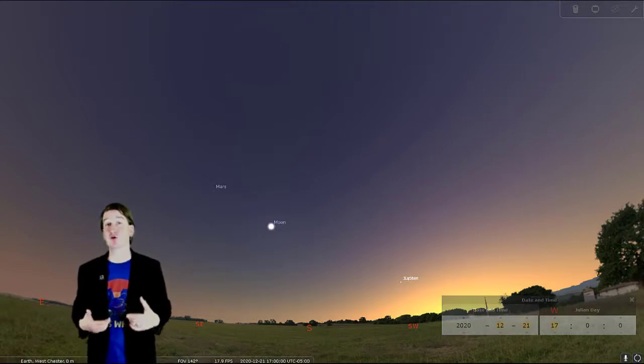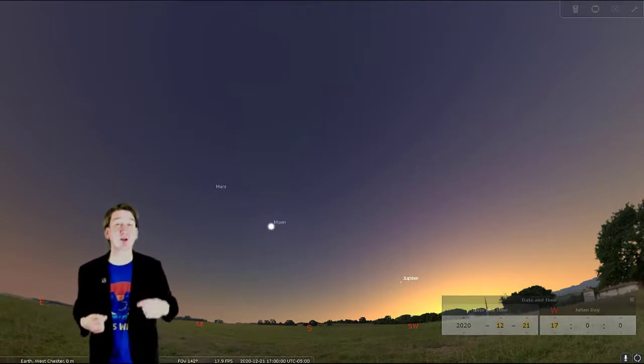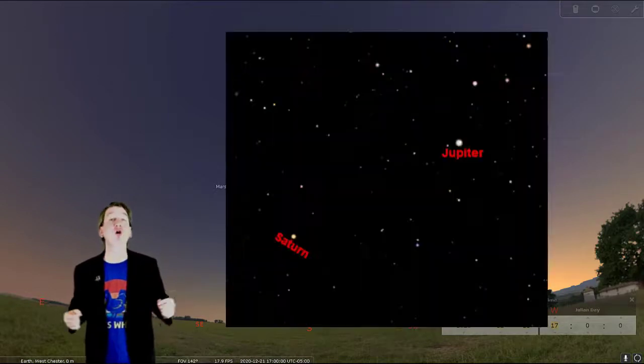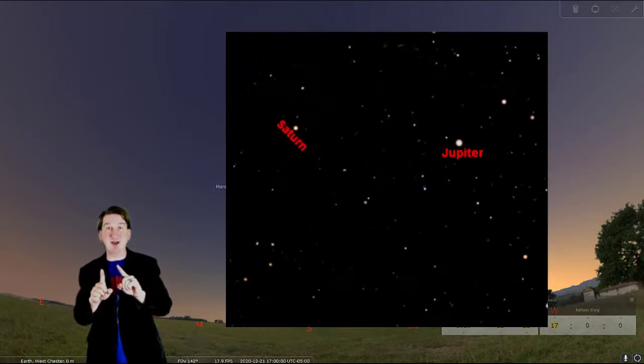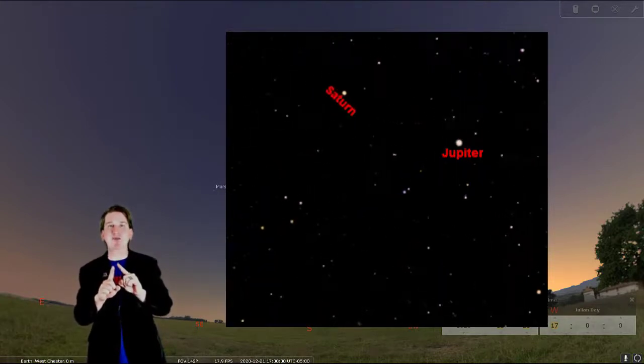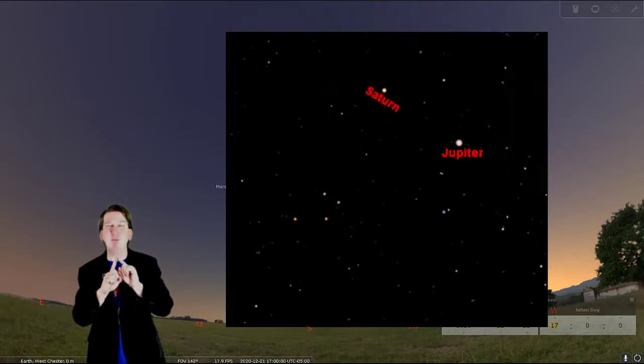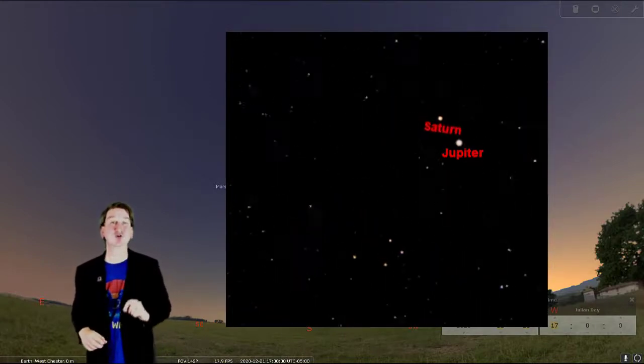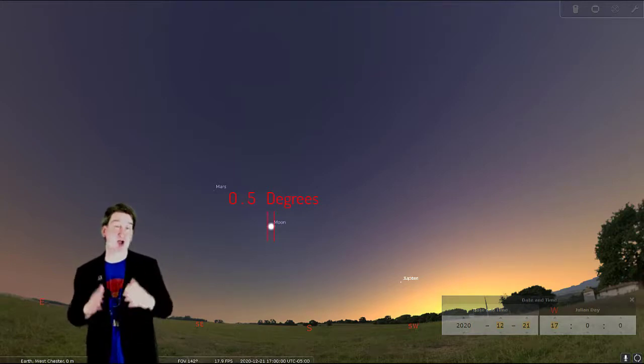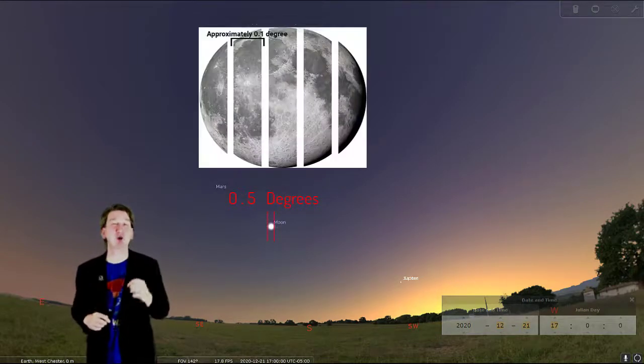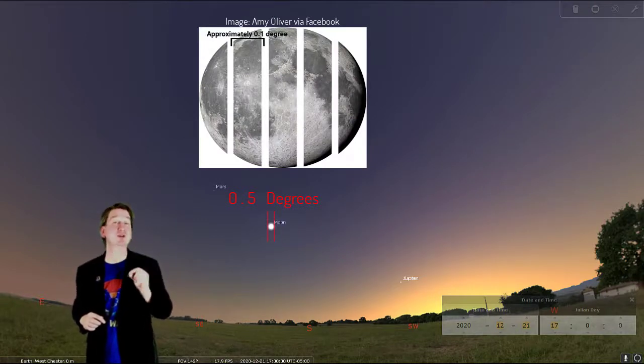This year, the great conjunction of Jupiter and Saturn is special because the two planets will appear closer together in the sky than they have since 1623. All through the fall, we've been watching Jupiter and Saturn slowly get closer and closer in the evening sky. On December 21st, they will be at their closest to each other, appearing only one-tenth of a degree apart in the sky. To give you an idea of how close that is, the moon is about five-tenths of a degree across in the sky. So imagine one-fifth the width of the moon in the sky.